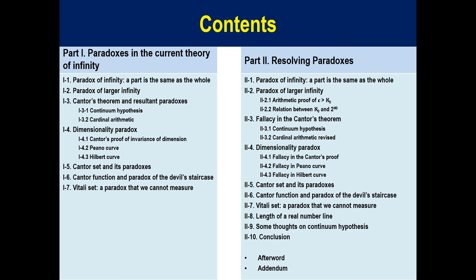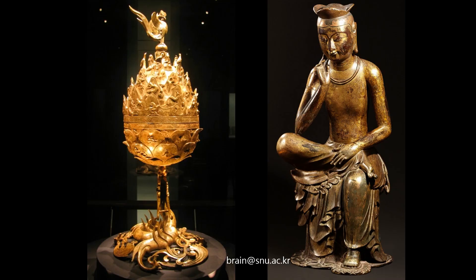If you want to look at the full discussion, you may watch Part 1, which discusses many other paradoxes present in the current theory of infinity, and Part 2, which discusses fallacies in reasoning leading to those paradoxes and rectifies those counterintuitive paradoxes. Part 1 is 80 minutes long and Part 2 is 93 minutes long, but you can move to the section corresponding to a chapter by clicking the timestamps in the notes. I hope you enjoyed the video, and if you find an error in my argument, please contact me by email. Thank you very much.